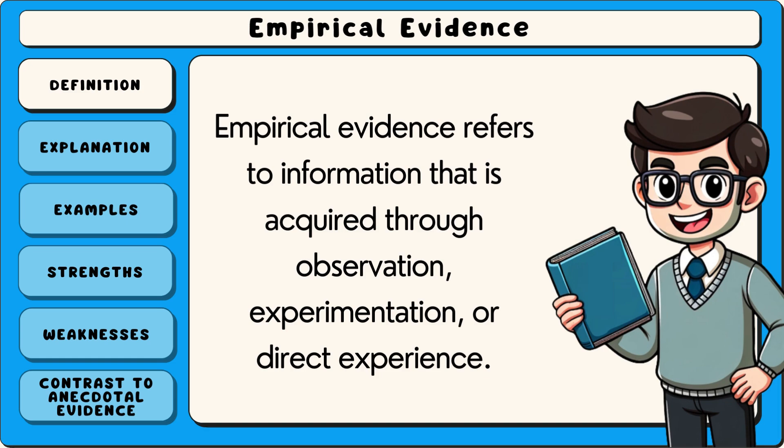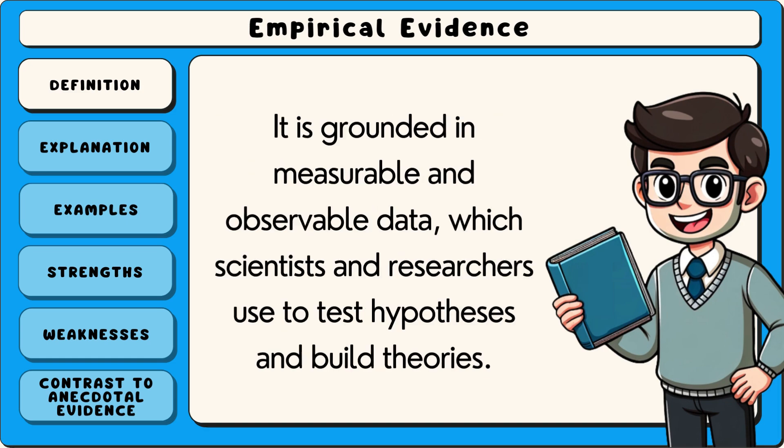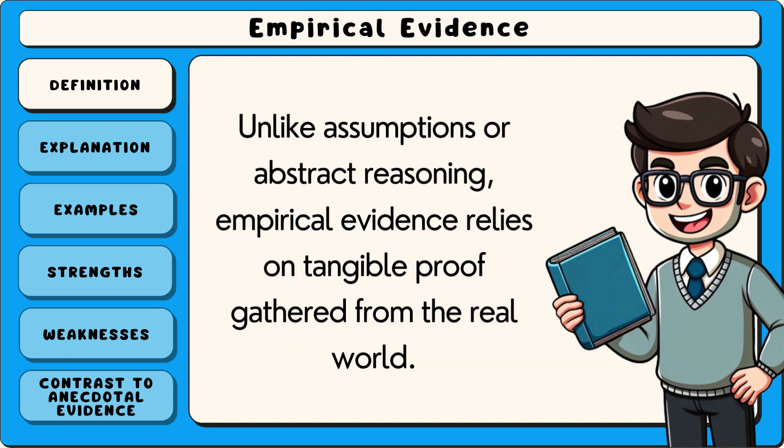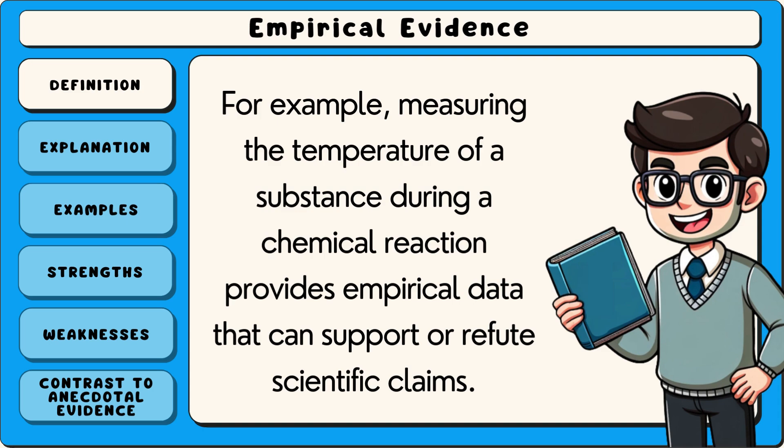Empirical evidence refers to information that is acquired through observation, experimentation or direct experience. It is grounded in measurable and observable data, which scientists and researchers use to test hypotheses and build theories. Unlike assumptions or abstract reasoning, empirical evidence relies on tangible proof gathered from the real world. For example, measuring the temperature of a substance during a chemical reaction provides empirical data that can support or refute scientific claims.